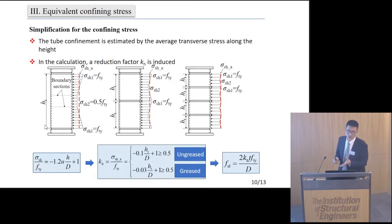Knowing the distribution of tube stresses, next let's discuss the simplification for the confining stress. As we know, the confinement effect is determined by the transverse stress. So in this analysis, the average transverse stress along the column height was adopted to estimate the tube confinement, as shown in these figures.